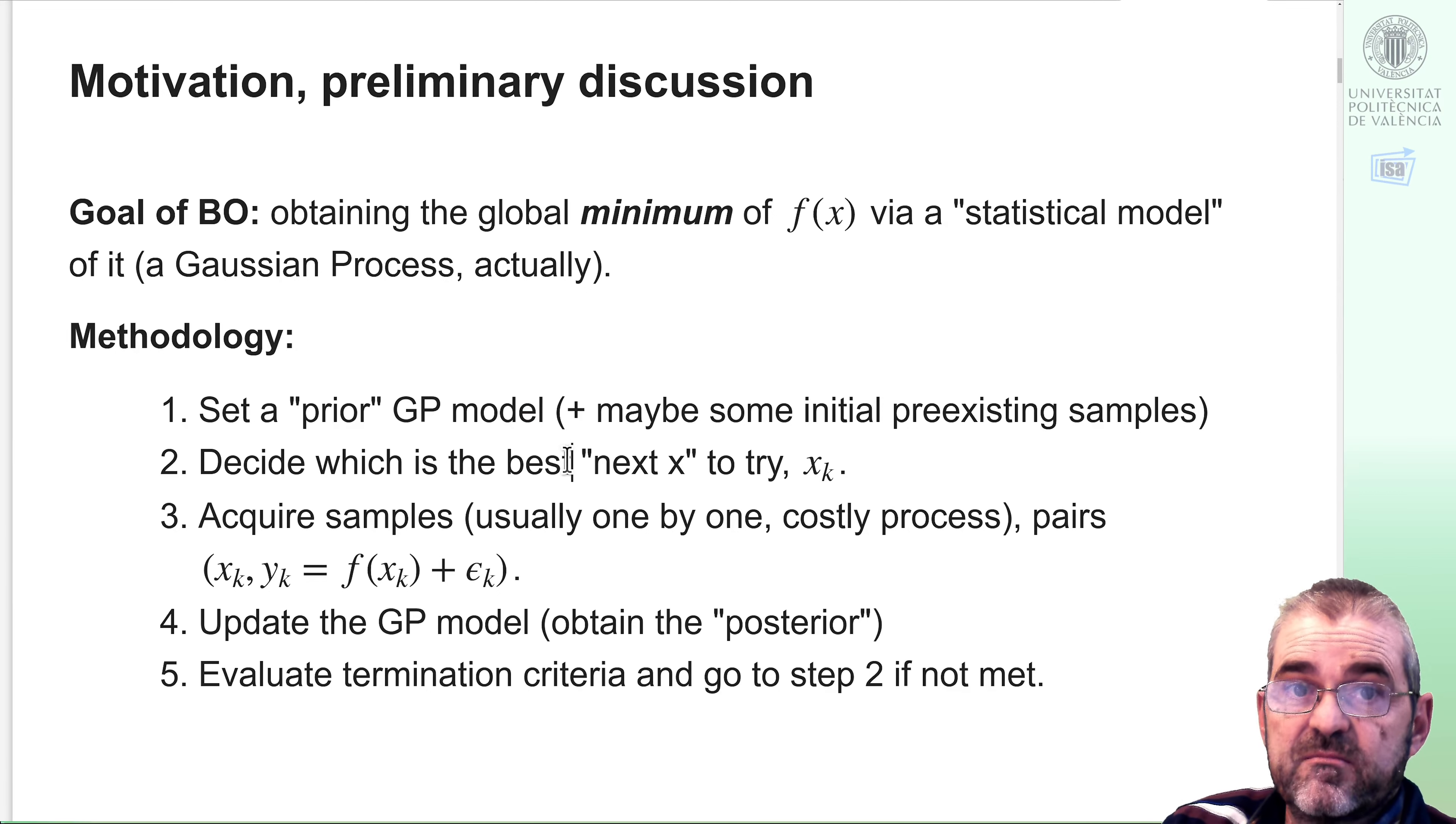Then we must repeat the following steps. We decide with some statistical analysis which is the best next sample to acquire. Then we acquire such sample one by one, because we assume that acquiring samples is a costly process, so that's why we do some statistical analysis offline before doing the actual experiment. Once we have the sample, we do some Bayesian update of the Gaussian process model to obtain the posterior, and then, unless some termination criteria are met, we again decide which is the next sample, acquire the sample, and update the model.